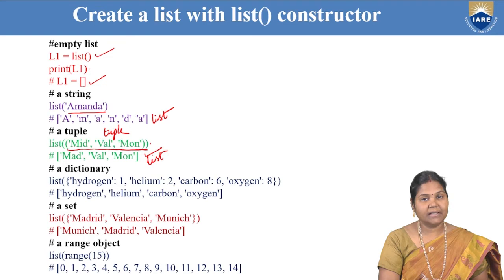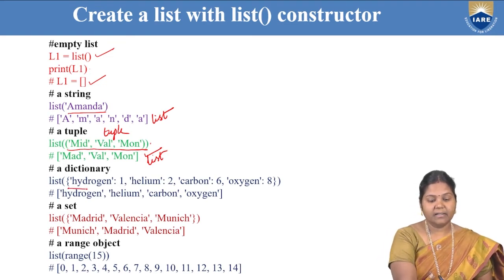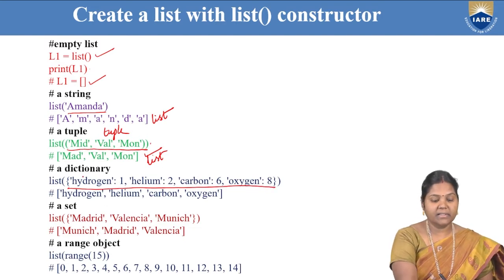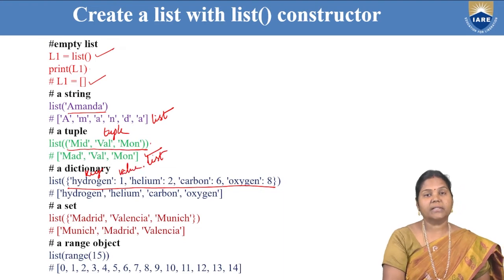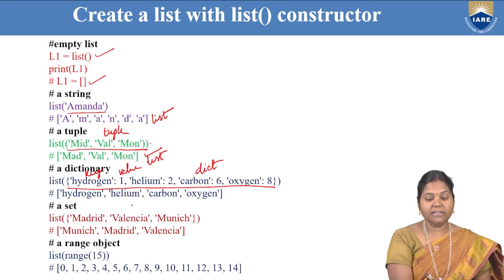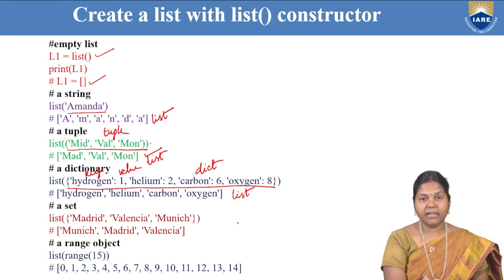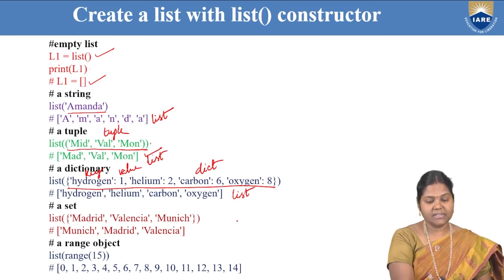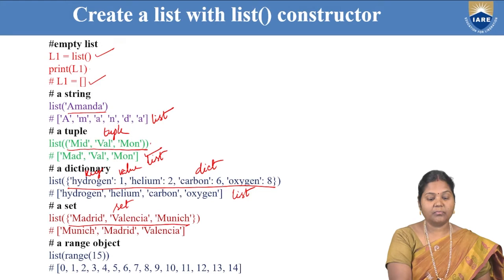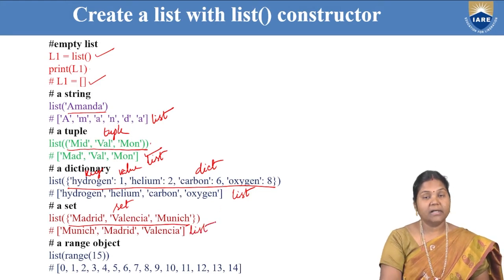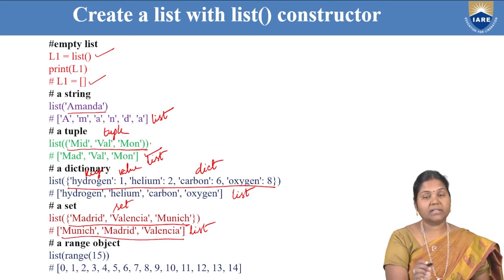You can also convert a dictionary into a list. When converting a dictionary to a list, only the keys come into the list, not the values — so 'hydrogen', 'helium', 'carbon', 'oxygen' are the keys that come to the list. A set, which is an unordered collection of data items, can also be converted into a list. Because sets are unordered, items may appear in a different order in the resulting list.